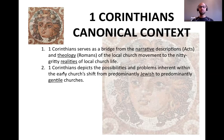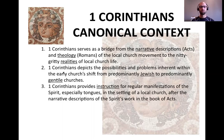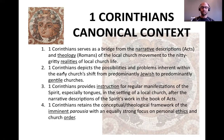Number two: 1 Corinthians depicts the possibilities and problems inherent within the early church's shift from a predominantly Jewish to a predominantly Gentile movement. In earlier letters like Galatians and the earlier parts of Acts, the issues throwing early Christians into conflict are Jewish concerns — circumcision and kosher food. But in Corinth those aren't concerns; instead it's Greek categories of gnosis and Gentile questions about eating meat sacrificed to idols — that's why 1 Corinthians has such a distinctive character. Number three: 1 Corinthians provides instructions for regular manifestations of the Spirit, especially tongues in the setting of a local church, after the narrative descriptions in Acts. Without 1 Corinthians, we would know very little about the operation of spiritual gifts in local church worship services.